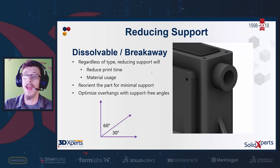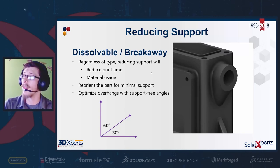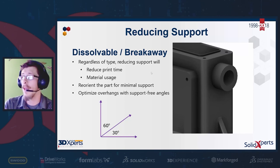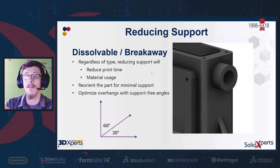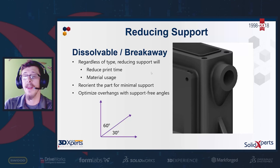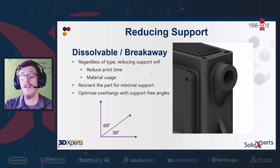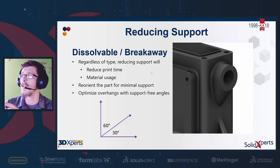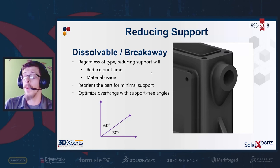For example, we have an overhang feature. What would normally require support all the way down to the build plate can be virtually eliminated by adding a loft. This does add a little extra material, so you have to determine if it outweighs the amount of support and print time, but it can eliminate the need for supports entirely.